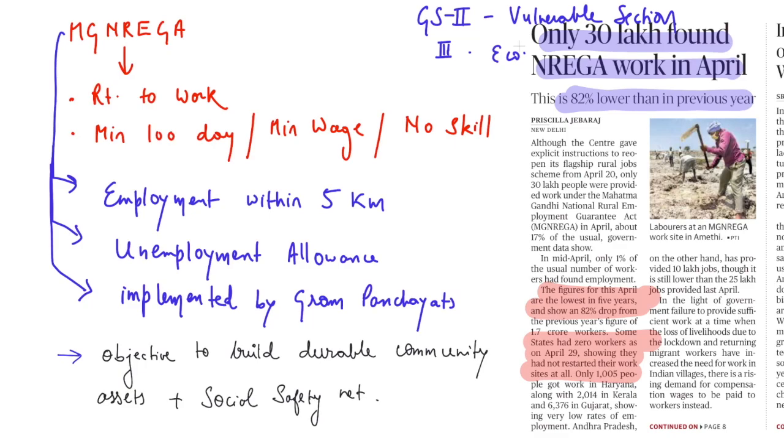Now friends, just going before into the implication, if you don't know, MG NREGA stands for Mahatma Gandhi National Rural Employment Guarantee Act and it is simply a scheme which provides a right to work to the people. Now friends, with respect to the basic information, minimum 100 days work is to be provided. Those two states can provide more also. Minimum wages to be provided and work which will be provided will require no skill.